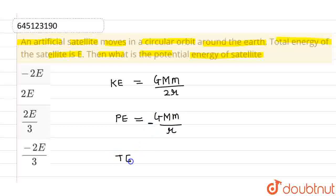Okay, and the total energy is given by minus G capital M small m divided by 2r.